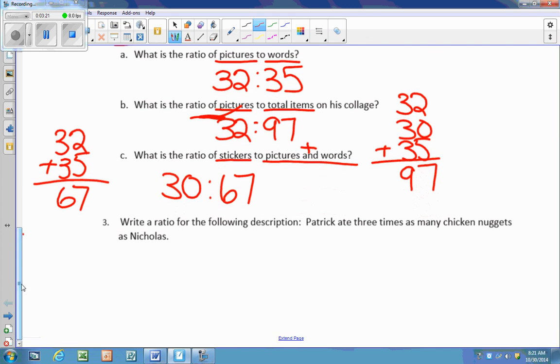Write a ratio, number three, write a ratio for the following description. Patrick ate three times as many chicken nuggets as Nicholas. Well, it doesn't tell me how many Nicholas ate, but I can tell because Patrick ate three times more, that if Nicholas ate one, then Patrick ate three times that, which would be three. So if I wrote the ratio of Patrick to Nicholas eating chicken nuggets, it would be three to one. If you gave me any other equivalent fraction or ratio, that would also be okay.